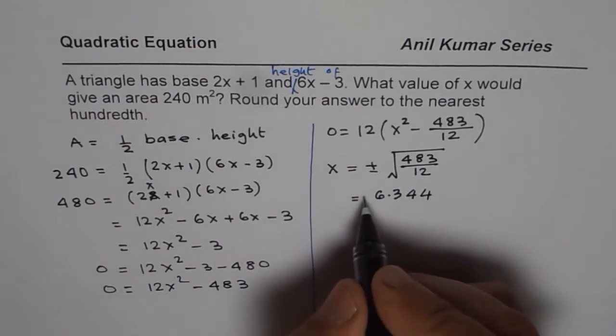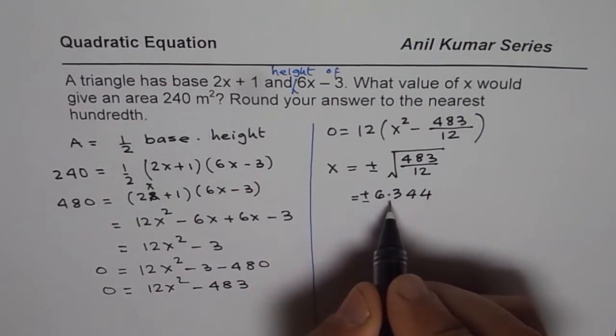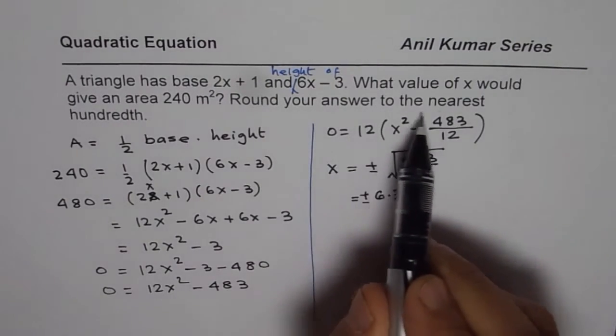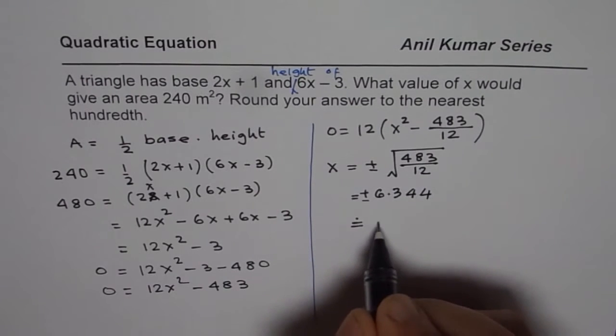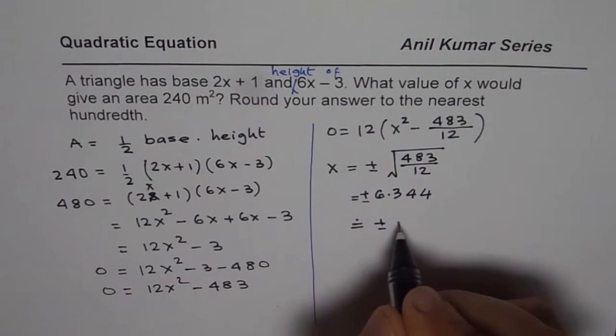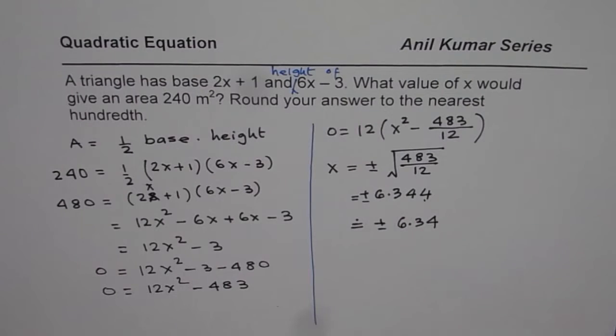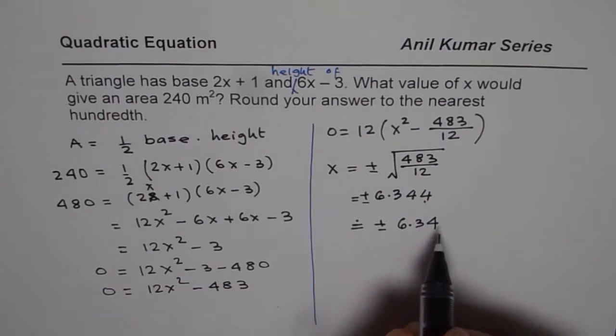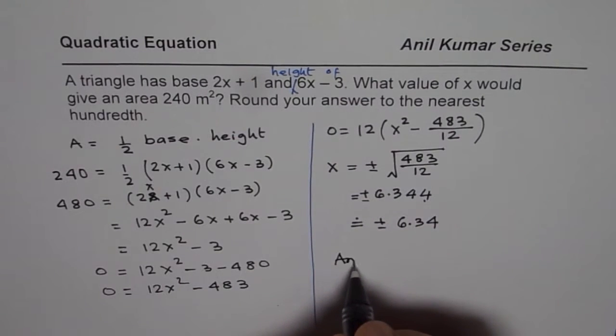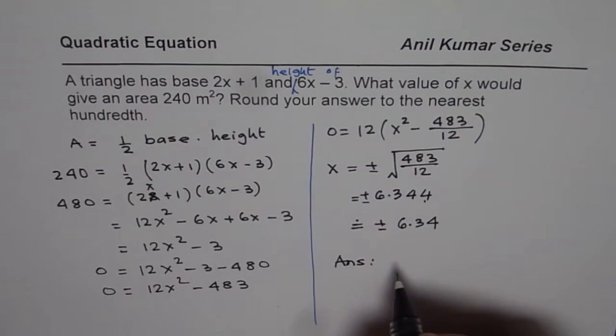Plus and minus, both values are 6.344. It says round your answer to nearest hundredth. So this could be rounded to plus and minus 6.34. Since this is less than 5, we can write x value as plus minus 6.34. That is the answer for this triangle to have the given area of 240 meter squared.